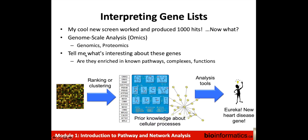If we want to know what's interesting about the thousands of genes that resulted from our transcriptomics experiment, we might ask if they are enriched in known pathways, complexes, or functions. This picture represents a transcriptomics experiment. Once you have collected the raw data, you might rank or cluster it to generate a gene list, and then in this course we want to compare that gene list to prior knowledge about cellular processes using various analysis tools, and ideally find some new interesting discovery.